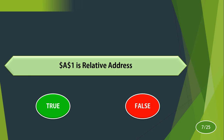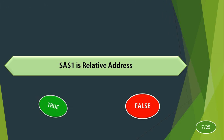The answer is false. If a dollar sign is prefixed before the column letter or the row number, it is called an absolute address. So the answer is false.